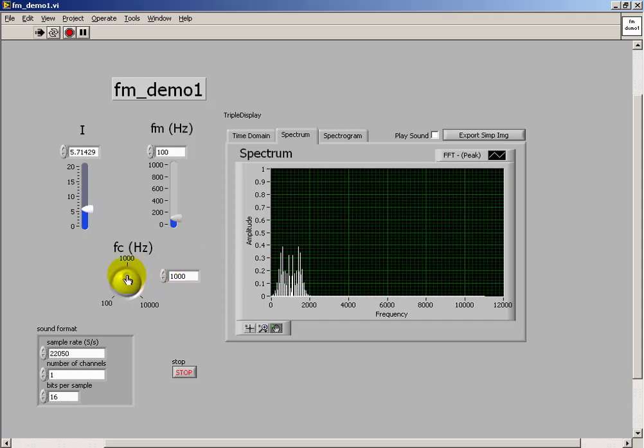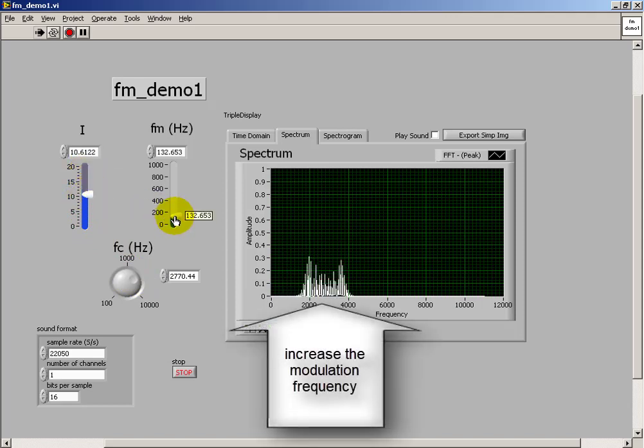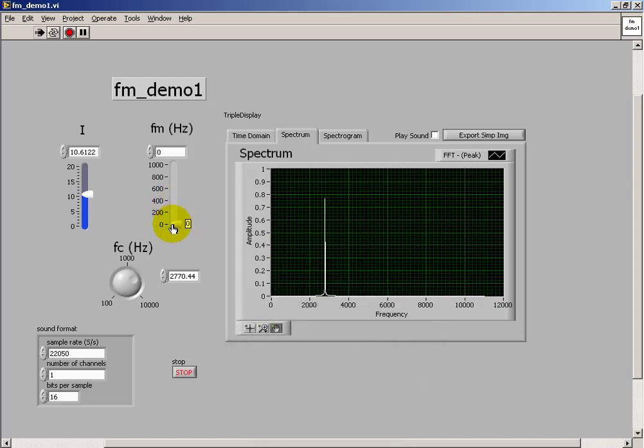So increasing the modulation index gives us a wider bandwidth signal. And then we notice that the modulation frequency adjusts the spacing of the side band ratios.